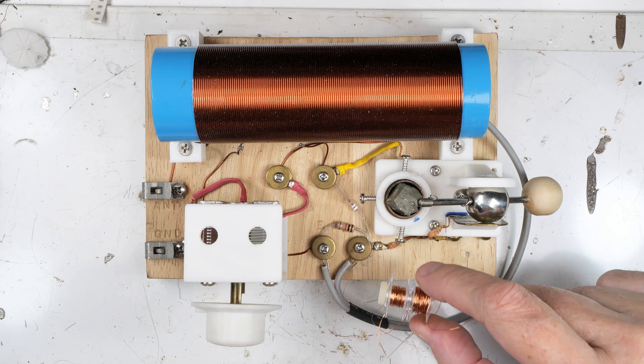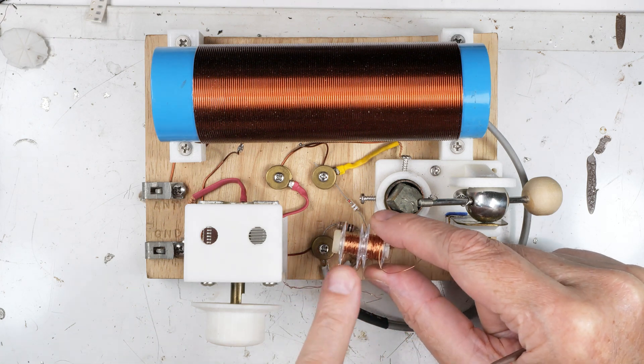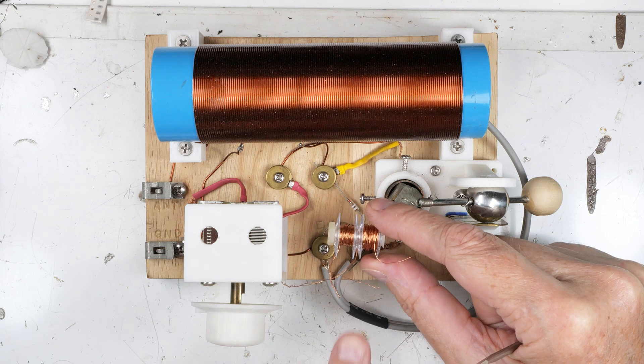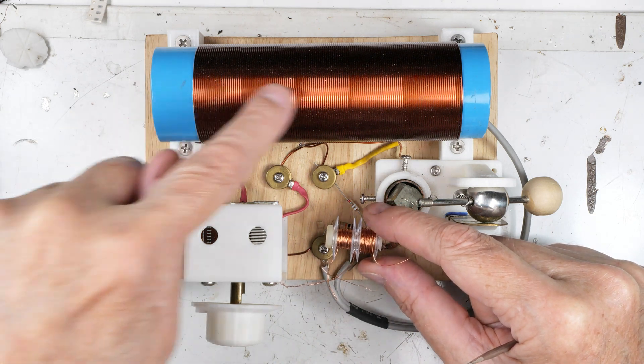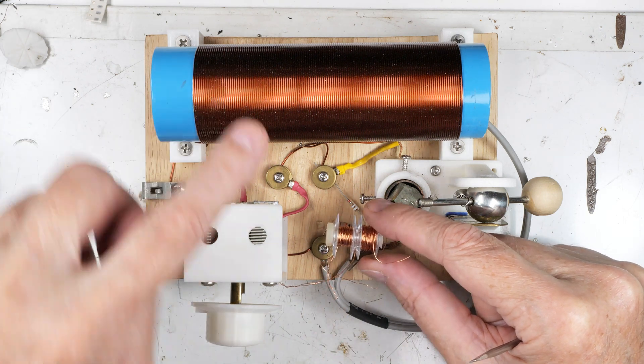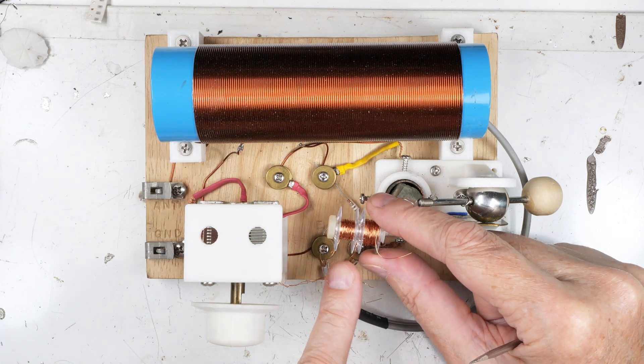This is the third video follow-up on this bobbin winding and why it didn't work in our crystal radio. And this is a scaled-down version of this. And the difference between these two coils, one of them is obviously the wire size.